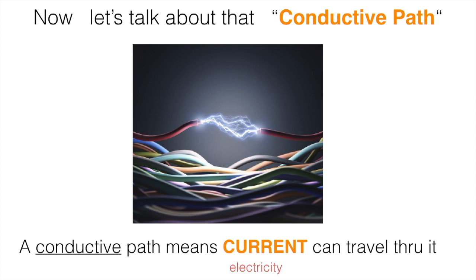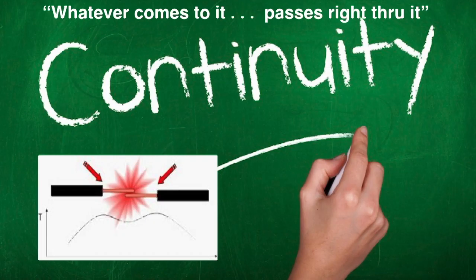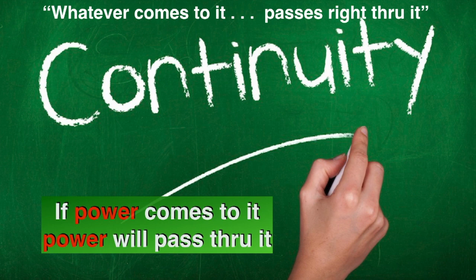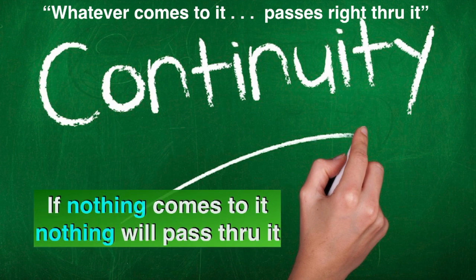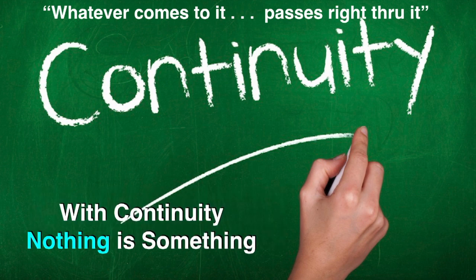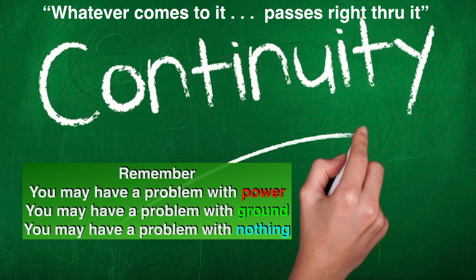Now let's talk about that conductive path. A conductive path means current can flow through it or electricity. So continuity is very important. What does continuity mean? Well whatever comes to it passes right through it. If power comes to it, power will pass right through it. If ground comes to it, ground will pass right through it. And if nothing comes to it, nothing will pass right through it. So with continuity, nothing is something. Sometimes doing nothing is doing something very important. Now remember you may have a problem with the power or you may have a problem with the ground, but you also may have a problem with nothing.